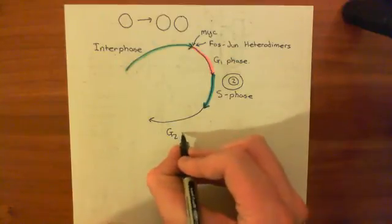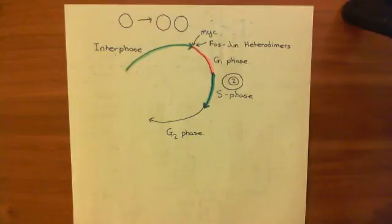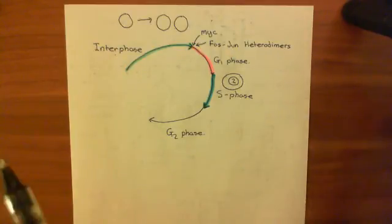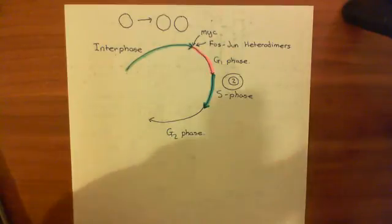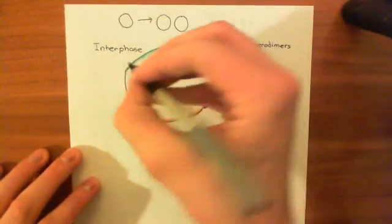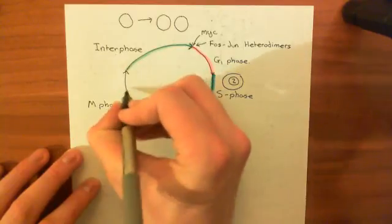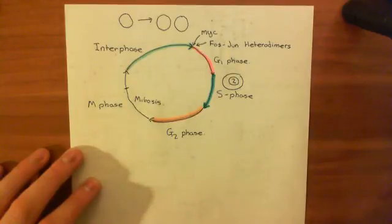The next phase is G2 phase — the second growth or second gap phase. In G2 phase, you continue producing proteins needed to turn from one to two cells, but you're also preparing for M phase — the mitotic phase. What's going to happen is the cell must split its nucleus into two through the process of mitosis — strictly meaning the division of the nucleus to make two identical nuclei.